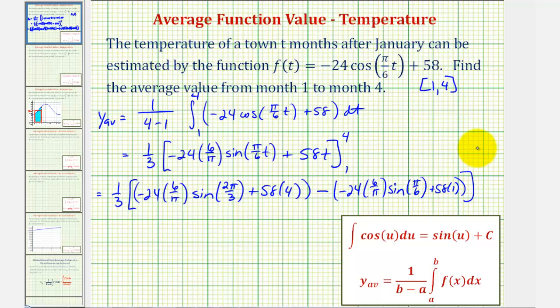From here, we'd go to the calculator and type this in. This would end up being one-third times 157.2226, approximately. Then multiplying by one-third, or dividing by three, this would give us approximately 52.41.